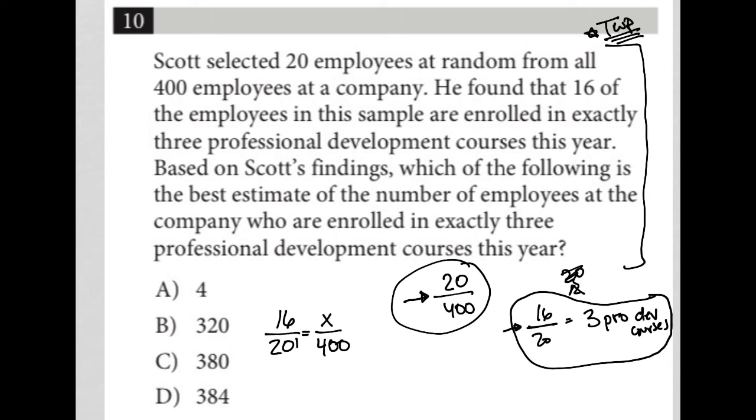So here, when I multiply 20 by X, I get 20X. When I multiply 16 by 400, let me go to my calculator. 16 times 400, that's equal to 6,400. When I divide by 20 on both sides, 6,400 divided by 20 is 320. So I have X equals 320.